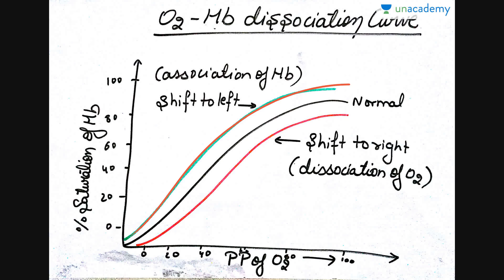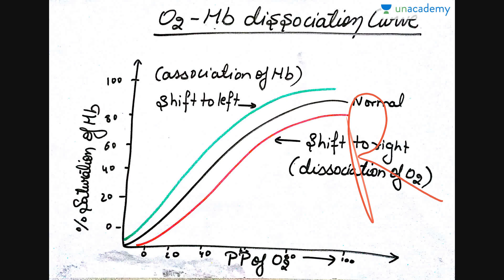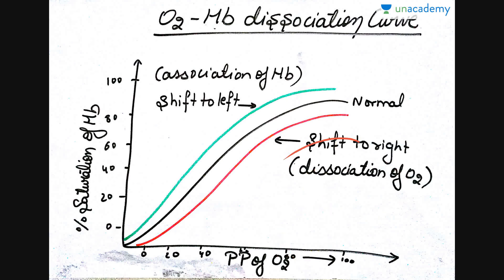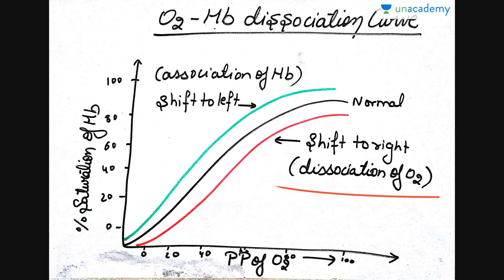Here is a short trick. Write the letter R. Now remove the tail — the lower part of the R. What remains above? The letter D. So: R stands for right, and if you remove the lower part you get D for dissociation. That means when the curve shifts to the right, dissociation of oxygen occurs. This makes it easy to remember: right shift equals dissociation.